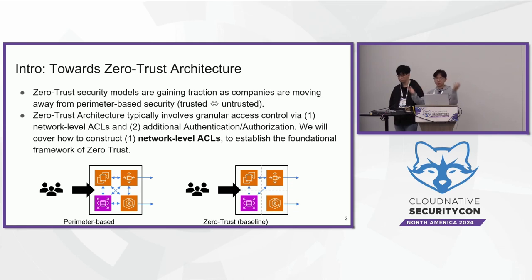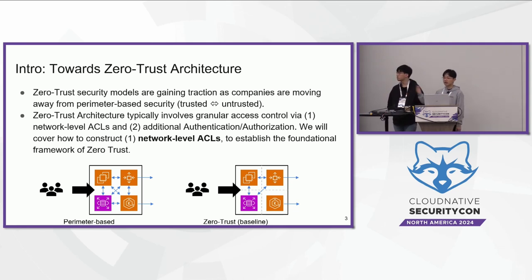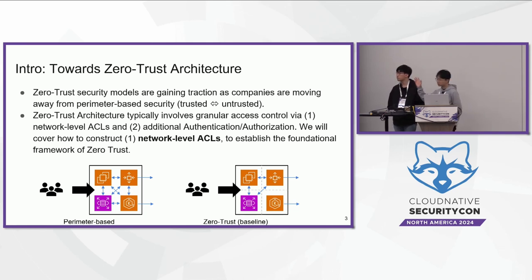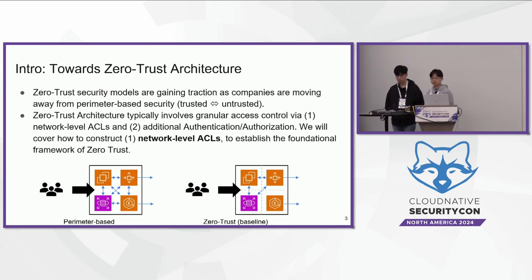We can do authentication and authorization through mTLS, access tokens, HTTP headers, or layer 7 authentication. But our presentation will focus on establishing network-level ACLs, not layer 7 authentication or authorization. We're going to focus on establishing network-level ACLs from scratch, which form the foundational framework of Zero Trust architecture.